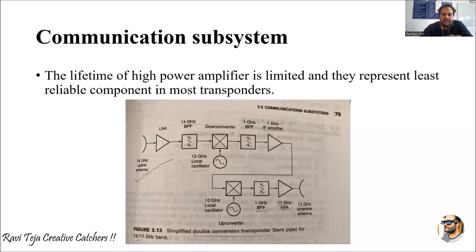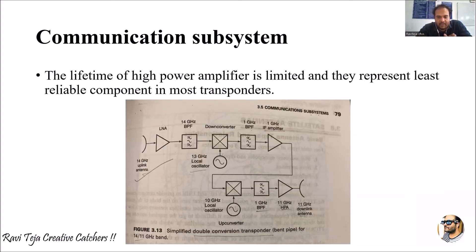Now coming to the simplified double conversion transponder, which is also a bent pipe. Here we are using double conversion, and this is specifically for the 14 by 11 gigahertz band. That means the uplink antenna will be at 14 gigahertz and the downlink antenna at 11 gigahertz. The lifetime of the high power amplifier is limited, making it the least reliable component in most transponders.